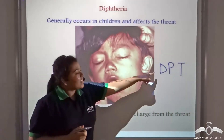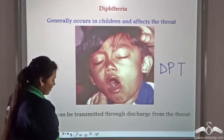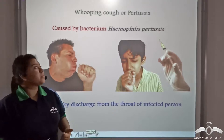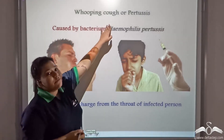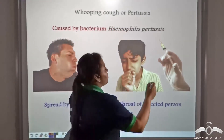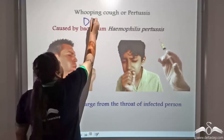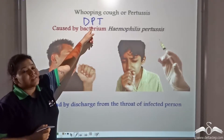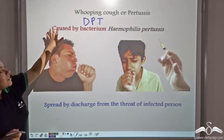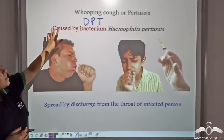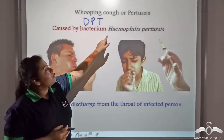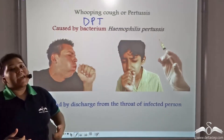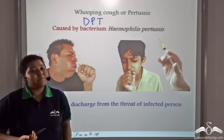A way to prevent diphtheria is the DPT vaccine, where D stands for diphtheria. The next disease this vaccine caters to is whooping cough or pertussis — P stands for pertussis in DPT. Whooping cough or pertussis is caused by the bacterium Haemophilus pertussis and is characterized by extreme coughing and troubles in breathing.